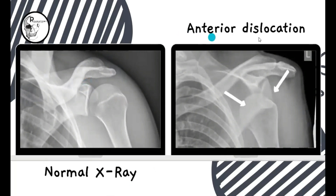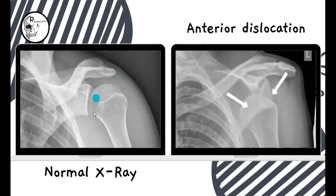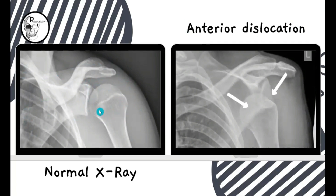First, anterior dislocation. On the left side we have a normal X-ray of the shoulder joint with the head of the humerus and the glenoid cavity of the scapula closely approximated to each other — this articulation is the shoulder joint. You can also make out the outer margin of the soft tissue, which is somewhat convex in shape.